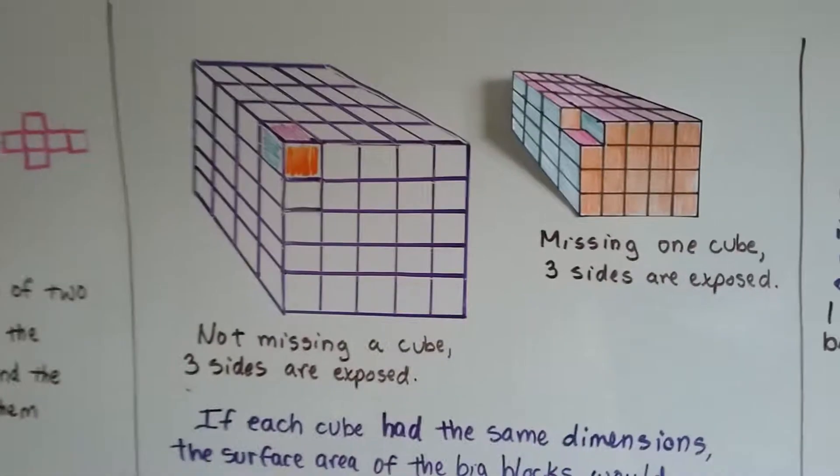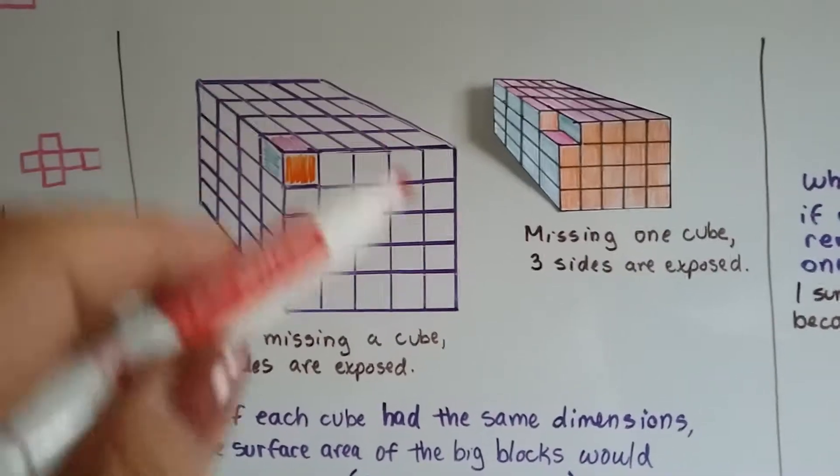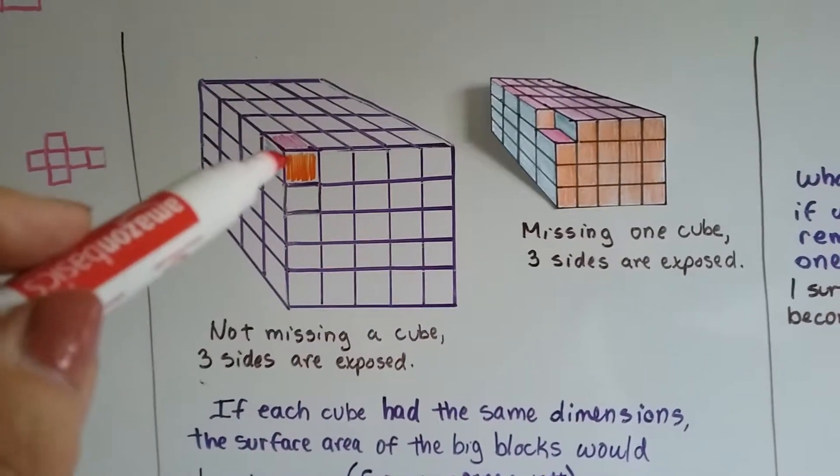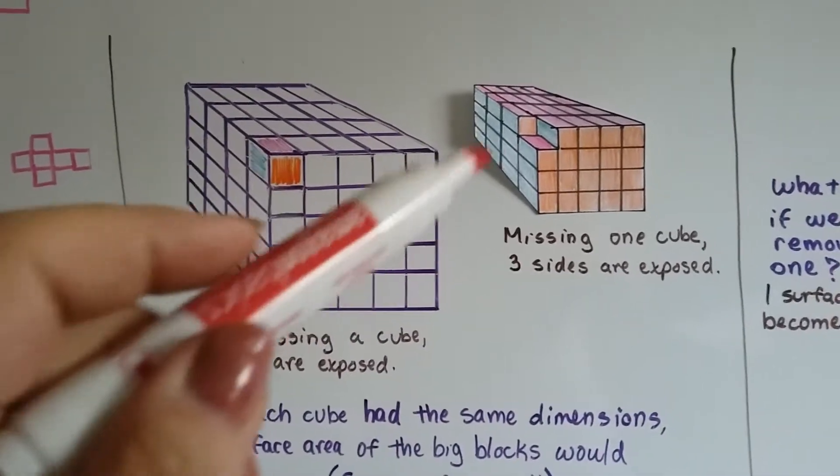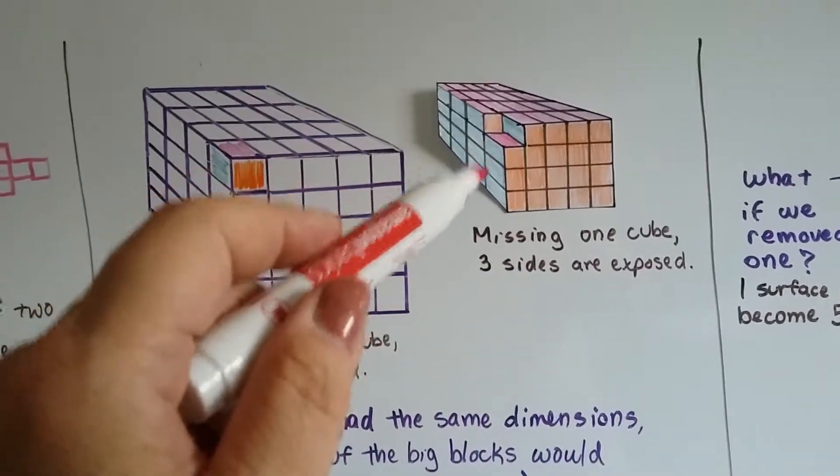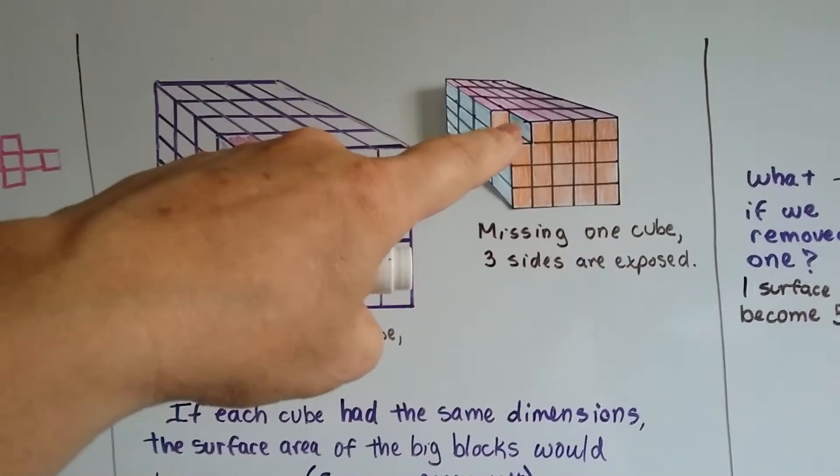Alright, so let's take a look at these two big blocks. This big block has all of its cubes, and this cube in the corner is punching outward because it's there. And then this one has it missing, so it's punching inward because it's not there.